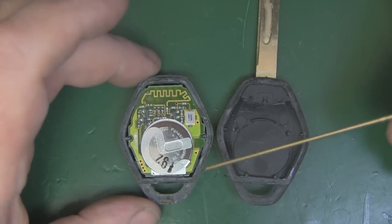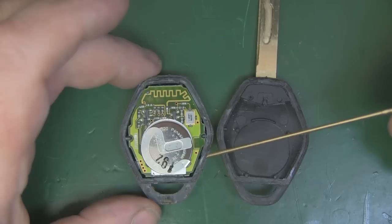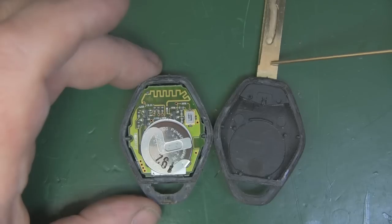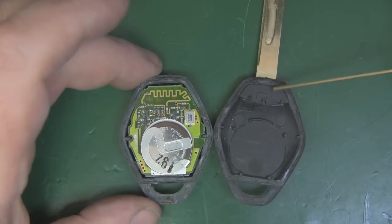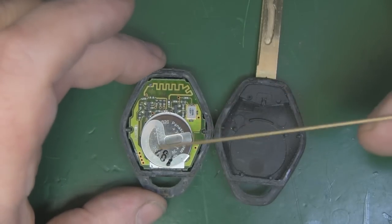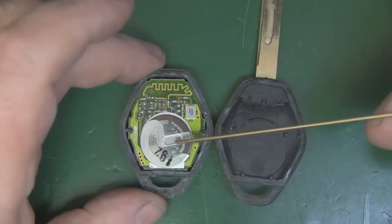You can see the thickness of the plastic I had to cut through. Here it is at its thickest, there because it's got to support the main body of the key itself. This is the coin cell. We've got to desolder this and then solder the new one in. This is a rechargeable coin cell.